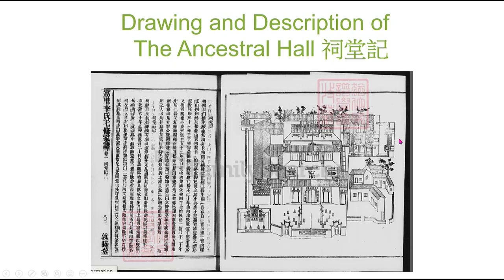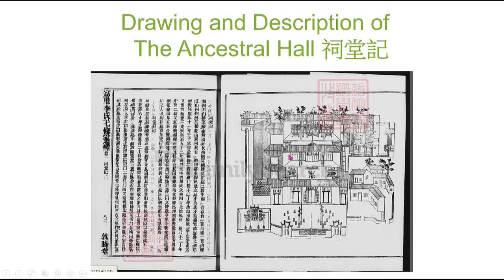This is a detailed description and drawing of the actual ancestral hall without the surroundings. You can see how many wings there are, how many rooms, and details such as windows in each building and doors. This is the main entranceway. I want to bring your attention to this right here — this is an iron furnace. Remember earlier we talked about how they have a song about an iron furnace.